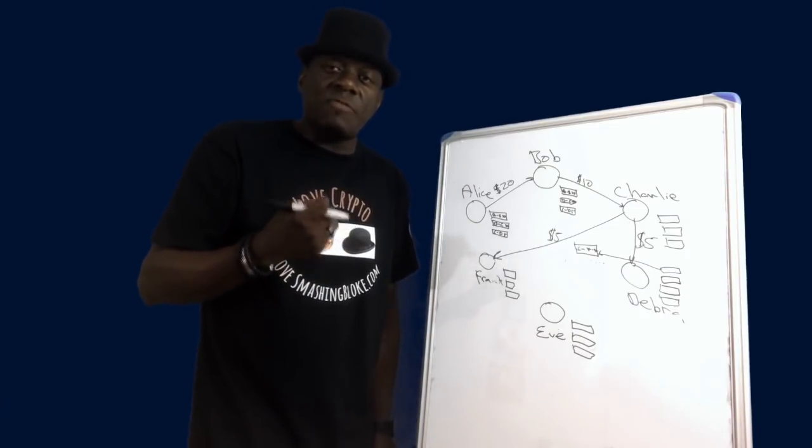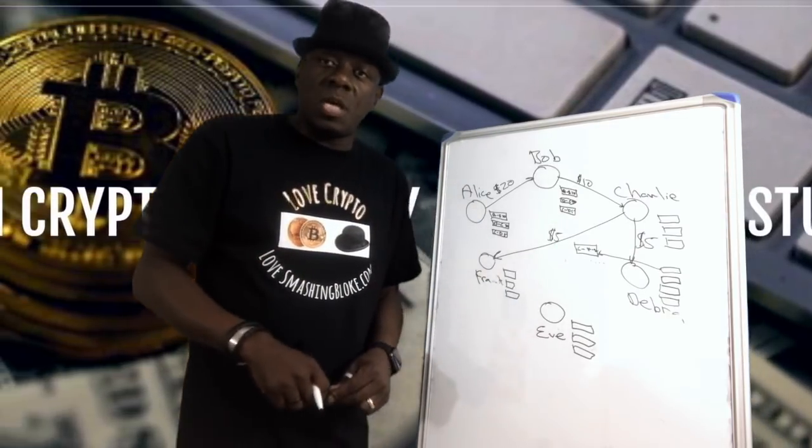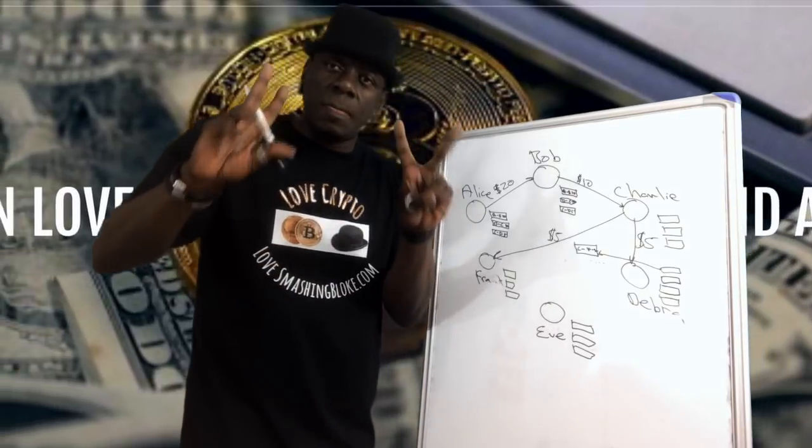Delegated proof-of-stake: you have to campaign, get votes and you become a witness. Once you become a witness you have the ability to write transactions into blocks. Smashing Block out. If you like what Smashing Block does, give us some likes and subscribe. Smashing Block peace.